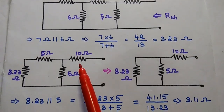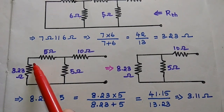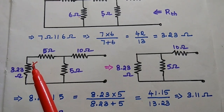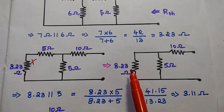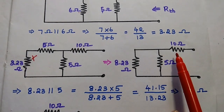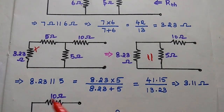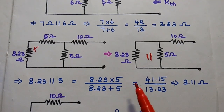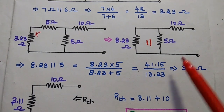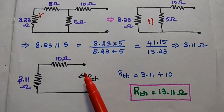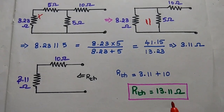This parallel combination of 3.23 ohm is in series with 5 ohm, with the remaining resistance values as such. For further simplification, we add these two series resistances: 3.23 plus 5 equals 8.23 ohm. That 8.23 ohm is in parallel with the 5 ohm resistance, giving 3.11 ohm. Then 3.11 ohm is in series with the 10 ohm resistance, so the Thevenin's equivalent resistance is 13.11 ohm.